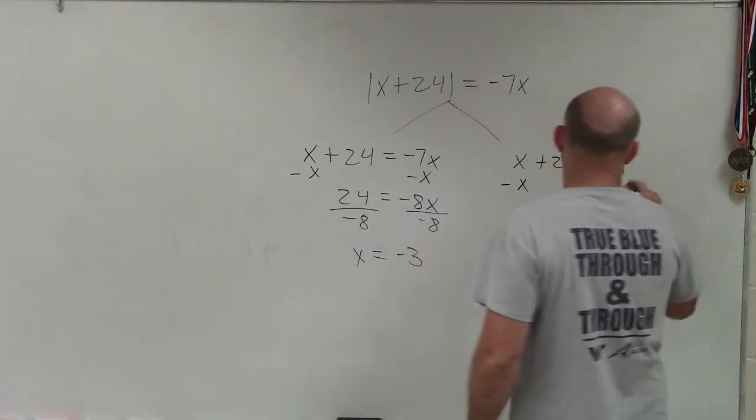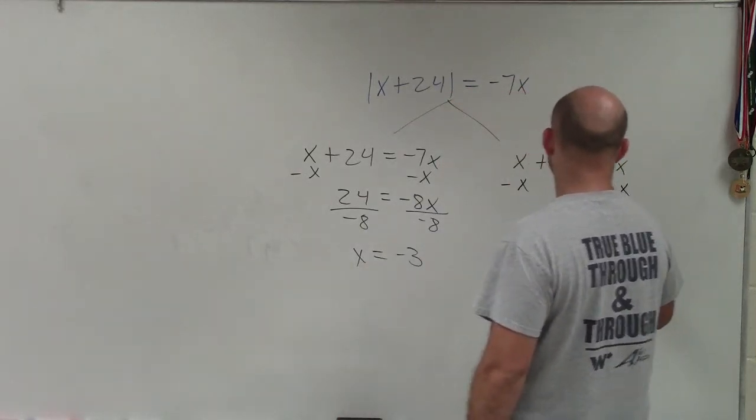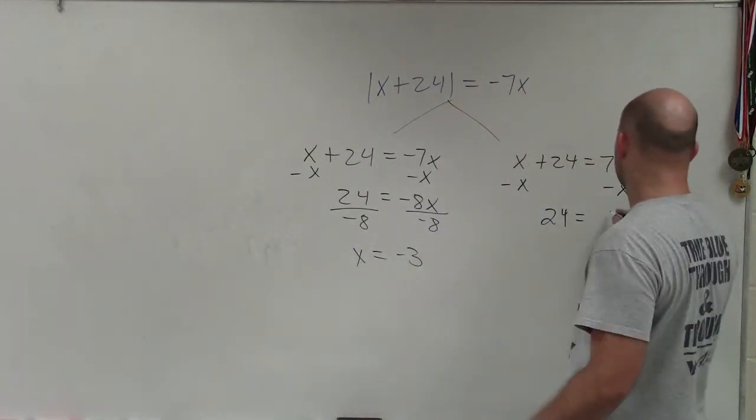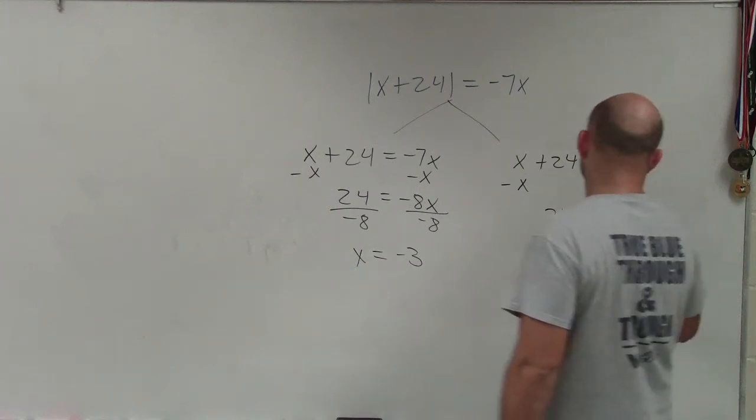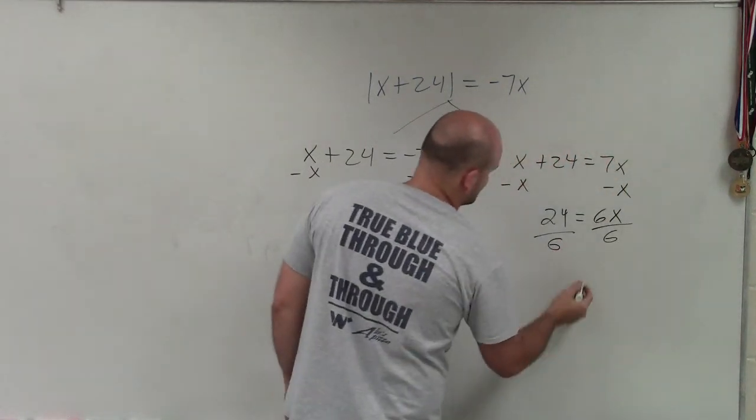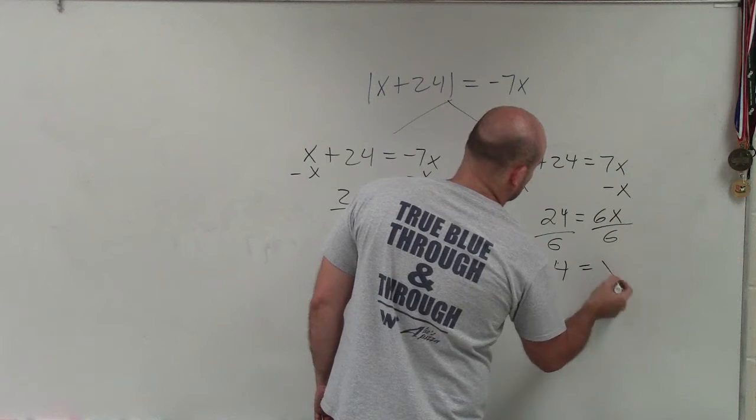Then I'll go and solve for x over here, so I subtract x, and I have 24 is equal to 6x, divide by 6, and 4 is equal to x.